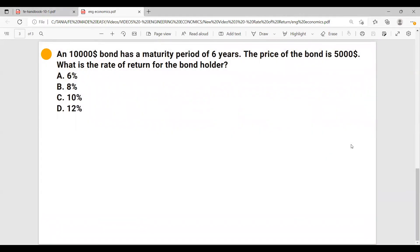A $10,000 bond has a maturity period of six years. The price of the bond is $5,000. What is the rate of return for the bond holder? So let's first see what do we know in this problem.